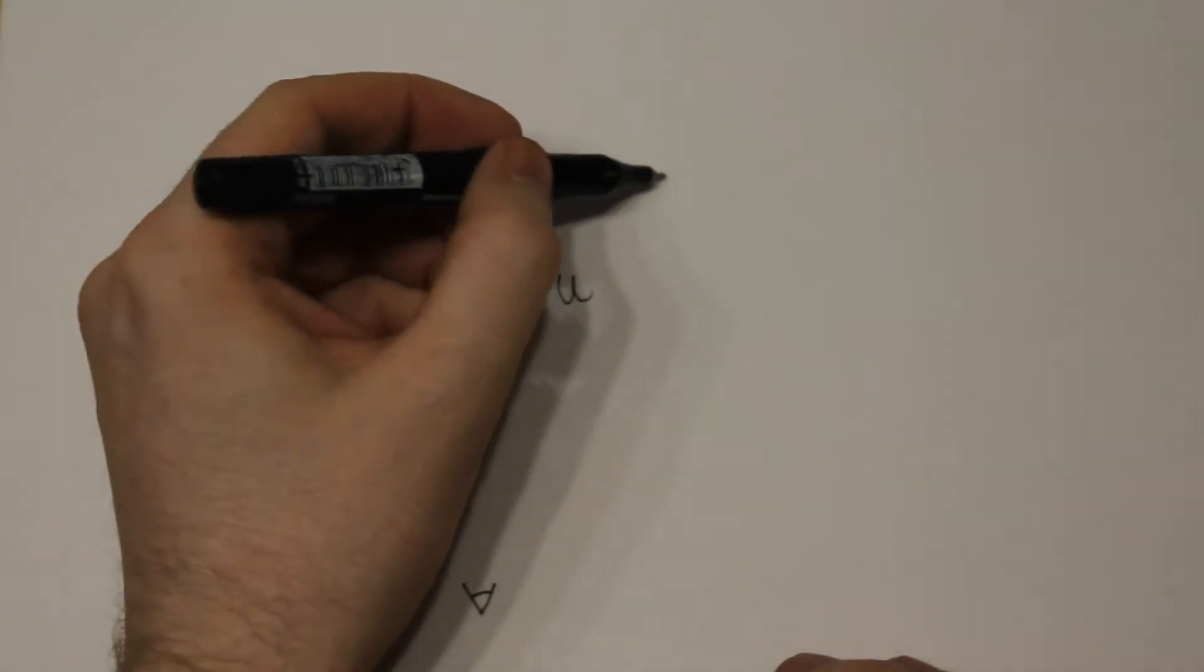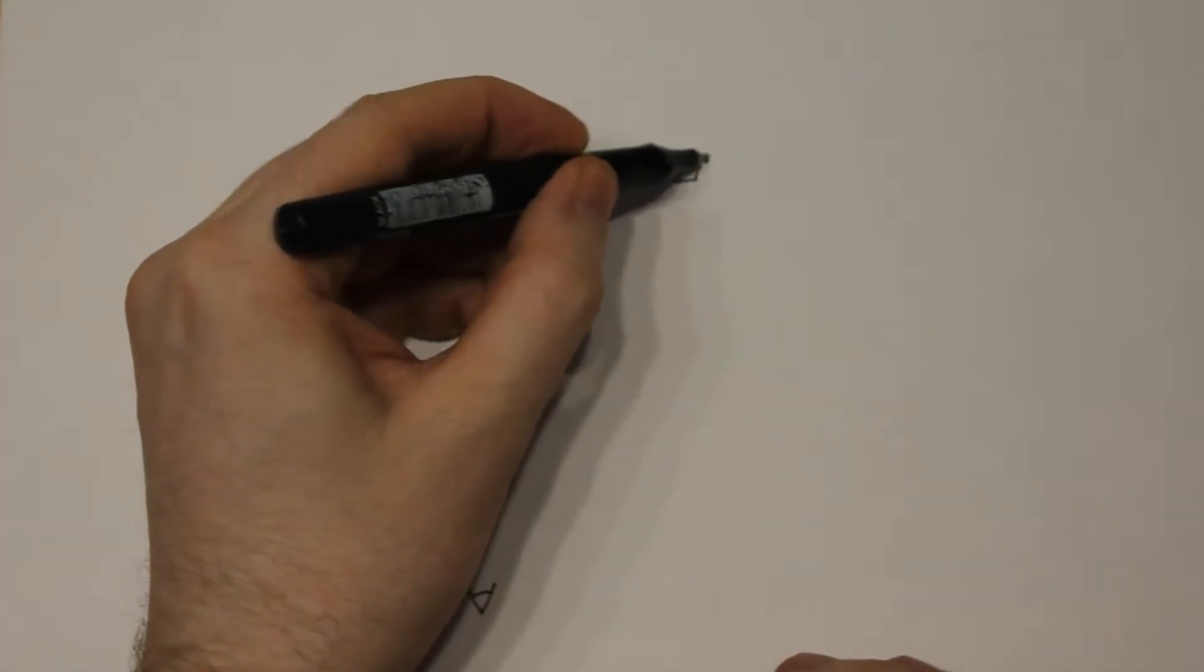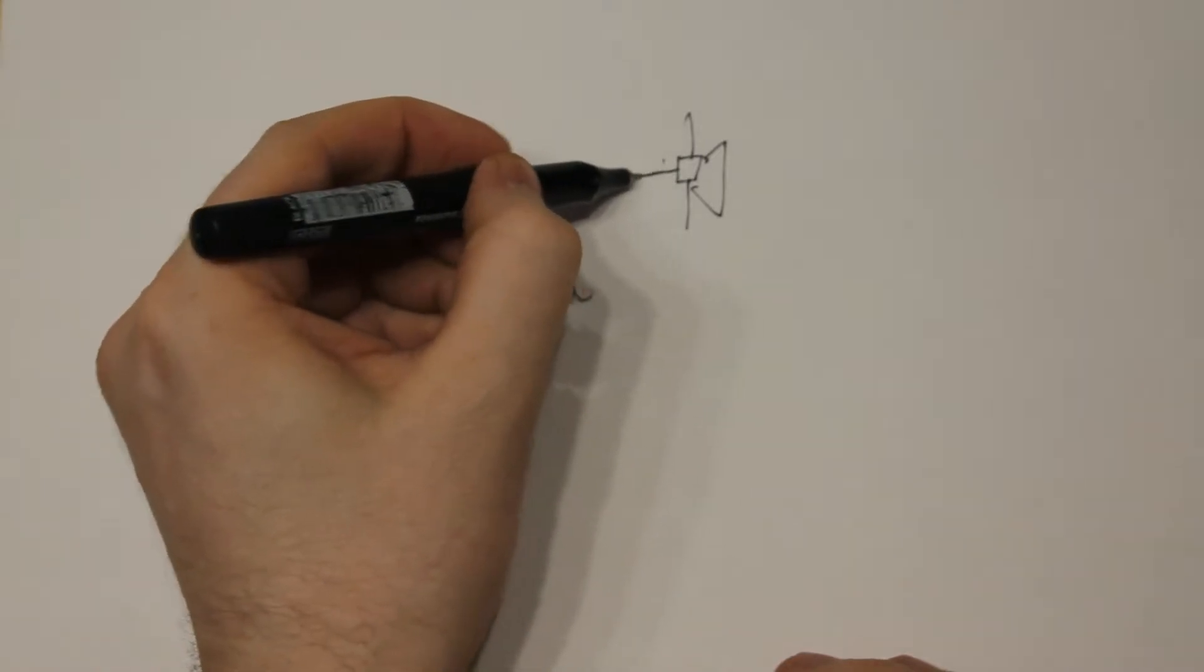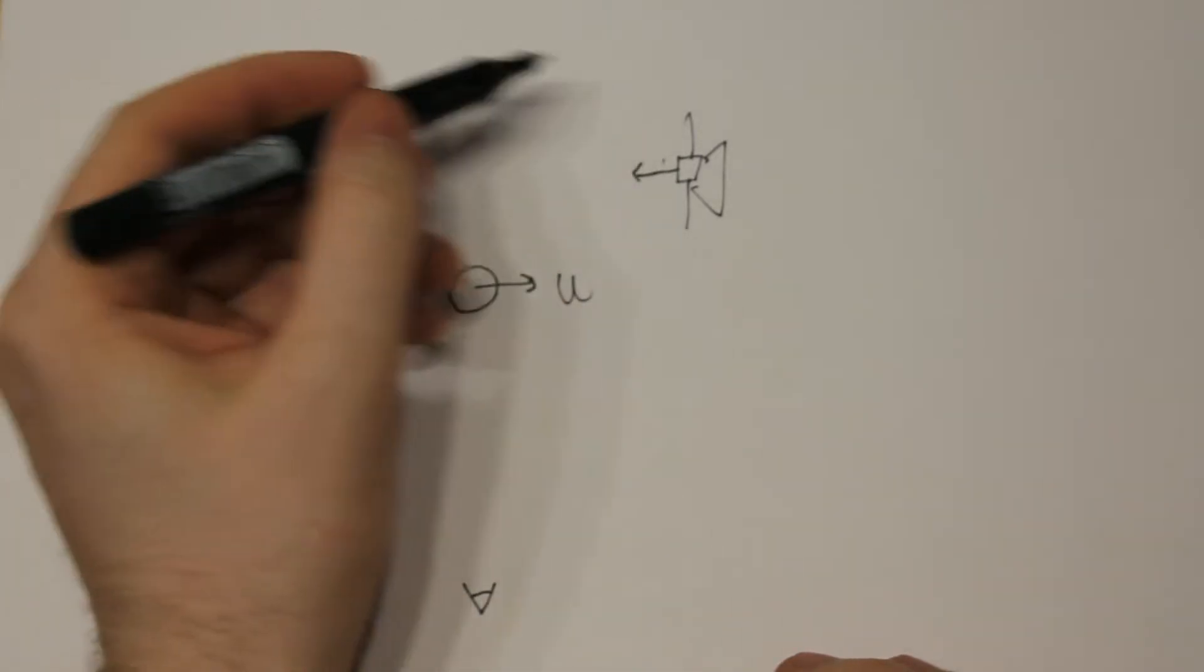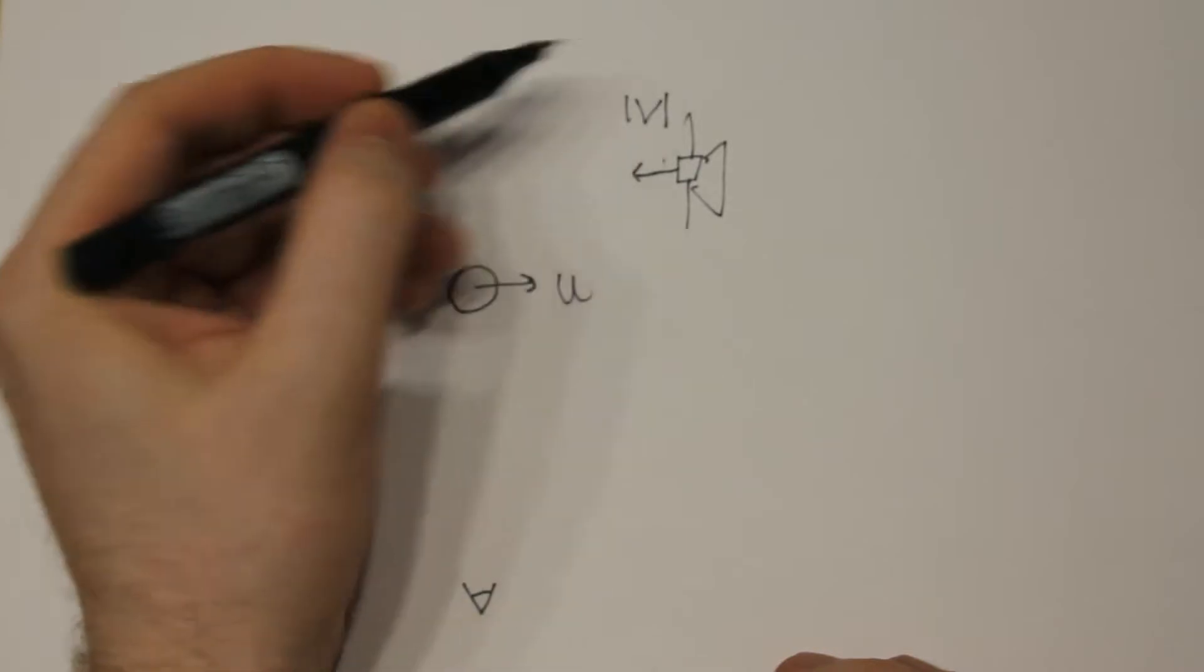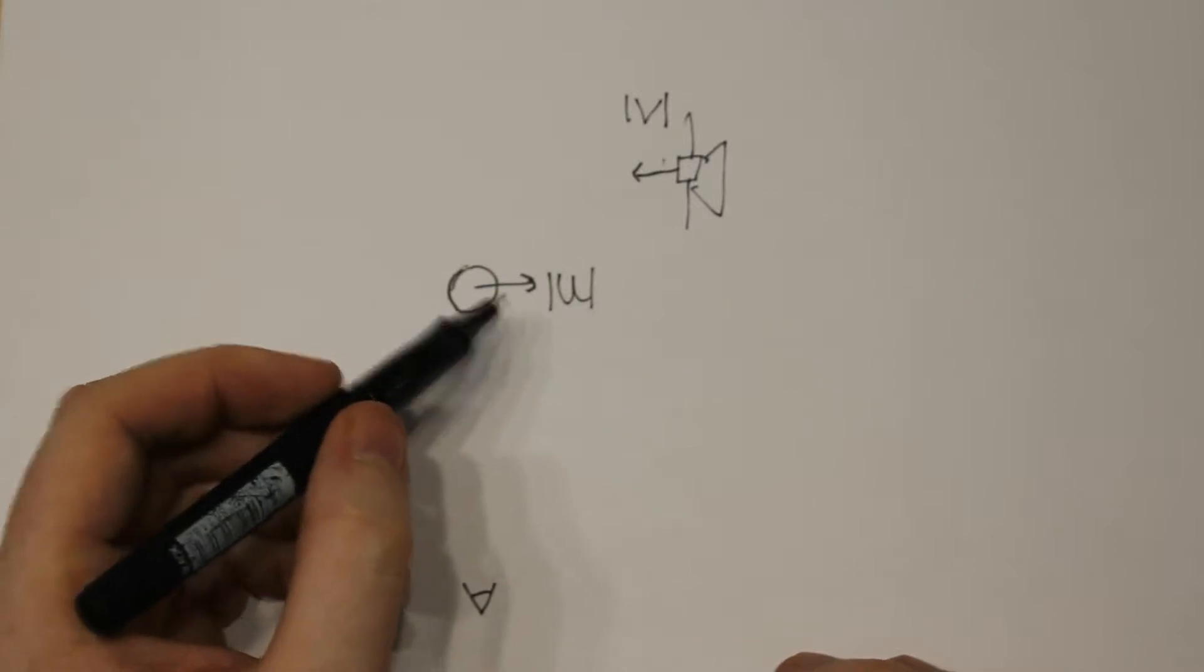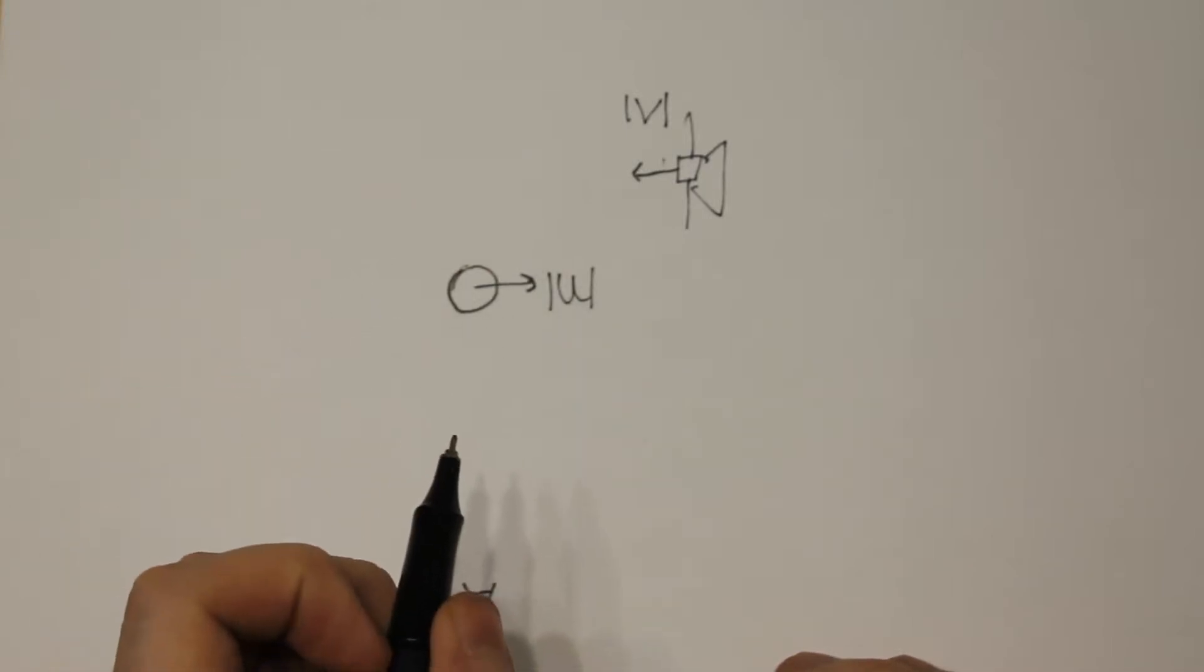So again we have our spacecraft that's approaching our planet here, and we're still approaching with the total speed v, and this of course is also the absolute value. We're not working with vectors just yet, we'll do that later.